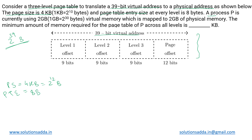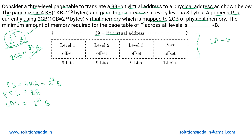A process P is currently using 2GB of virtual memory. As we saw, 2 to the power 39 bytes is the maximum possible size, but our process is using just 2GB, which means 2 to the power 31 bytes. So this is the size of the process. Our logical address space is 2 to the power 31 bytes, and it is mapped to 2GB of physical memory. What we want is the minimum amount of memory required for the page table of process P across all levels.